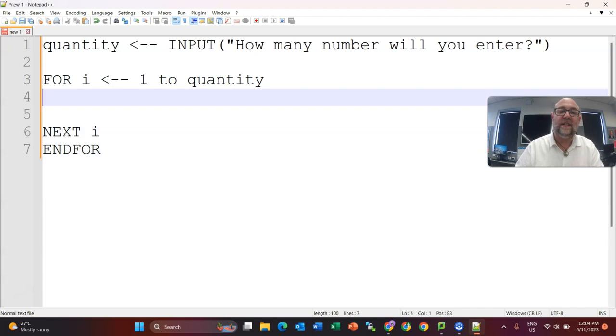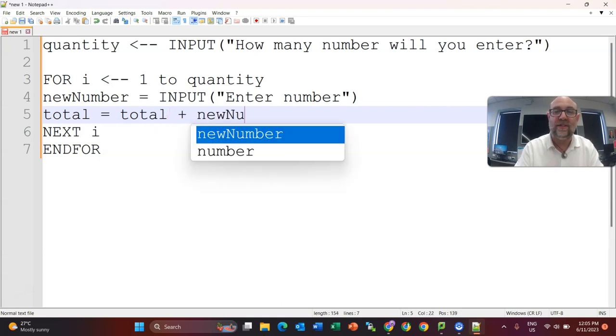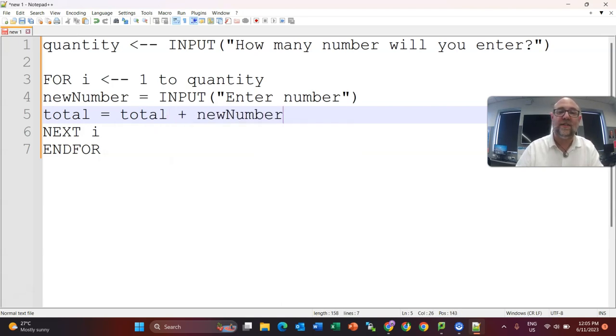So whatever is inside this loop will happen 10 times. What I'm going to do is I want to get the total of them. So I'm going to get this thing called new number, and it is also going to come from an input. Enter number. There we go. So they will enter that number, and then I will say that total equals total plus whatever new number is. So the first time they run this, total will be 0.